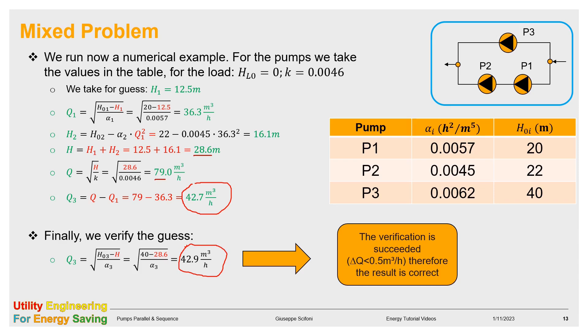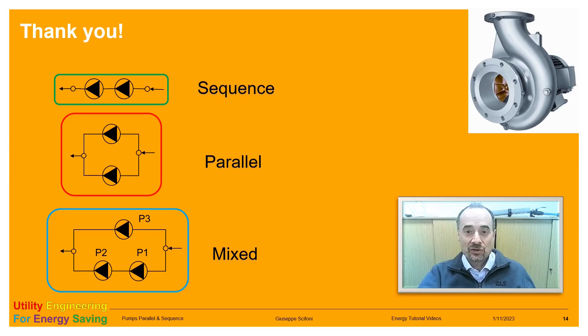Should be more pumps, a similar algorithm can be applied. We need always to guess one parameter, for example H₁, and then verify the choice at the very end. Definitely, the solving complexity does not increase, since it only depends upon one unknown variable. I hope you have enjoyed my presentation. Please let me know your comments and thank you for your attendance.